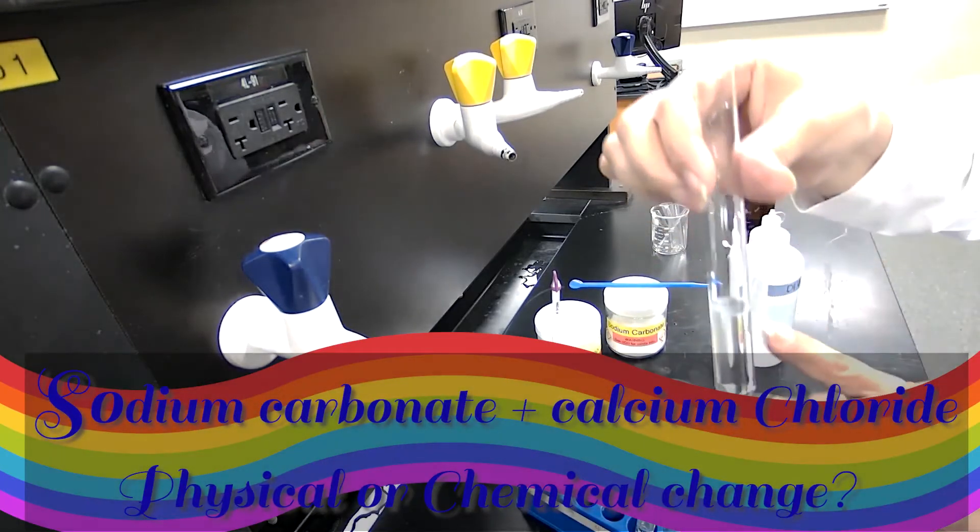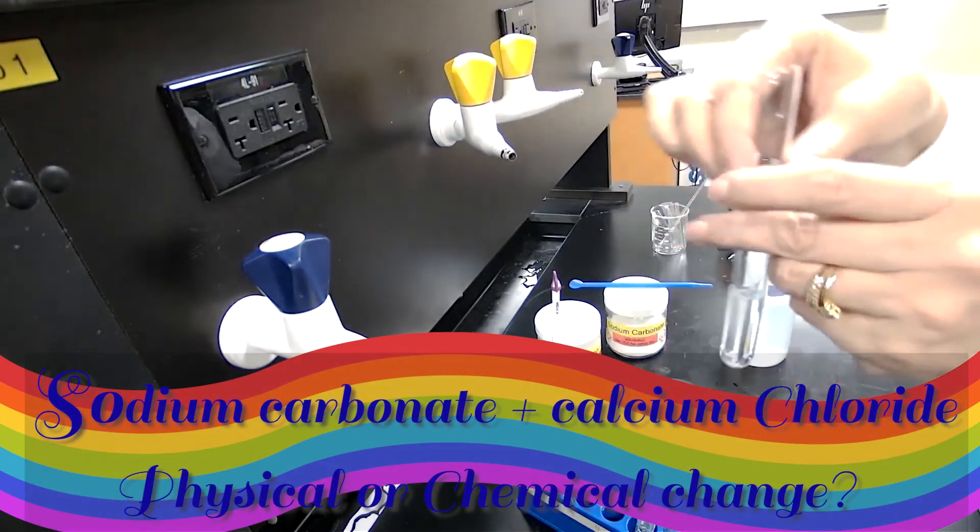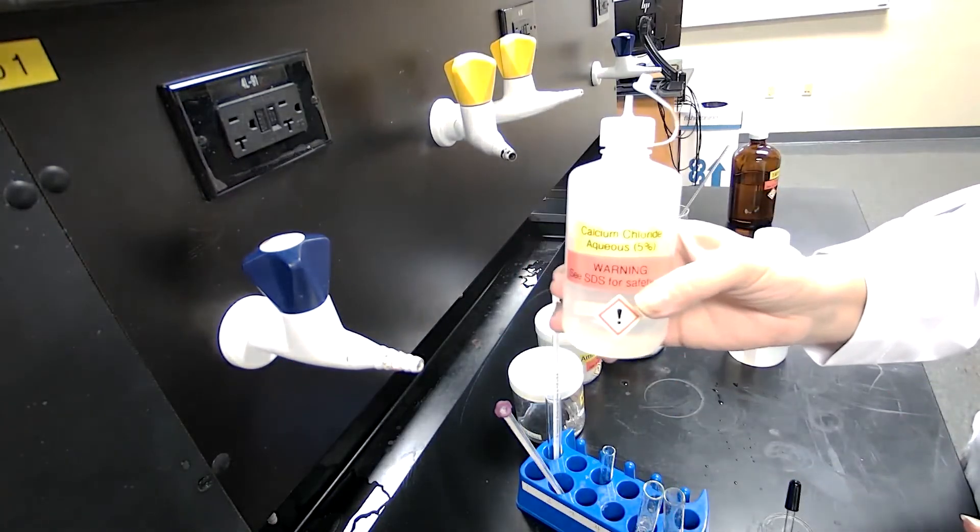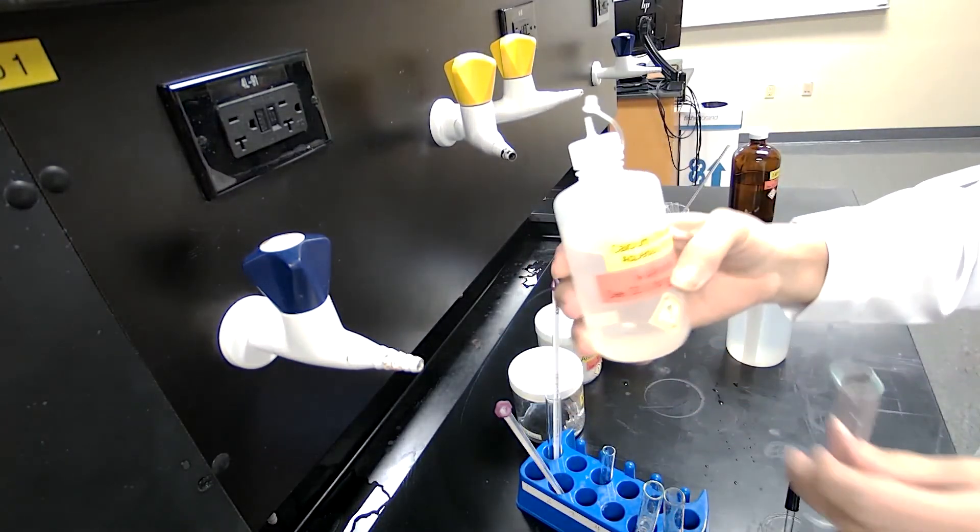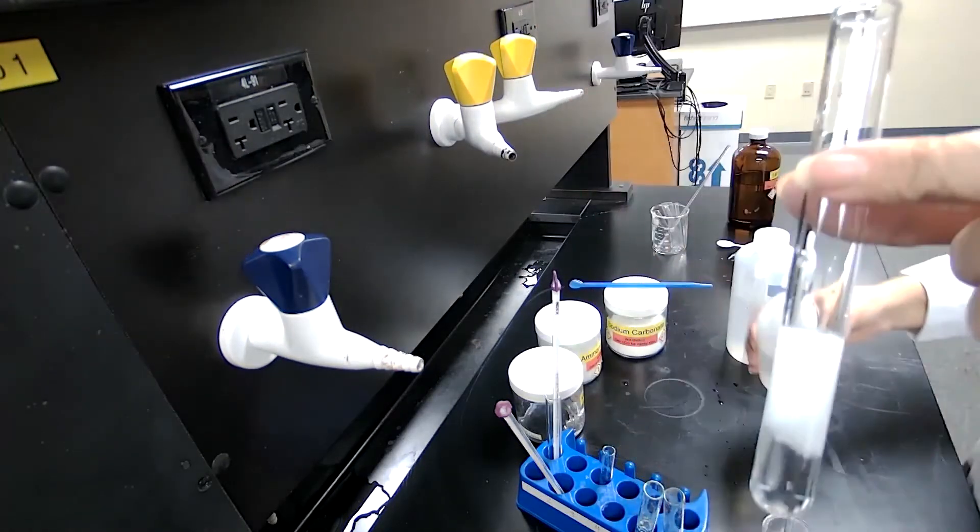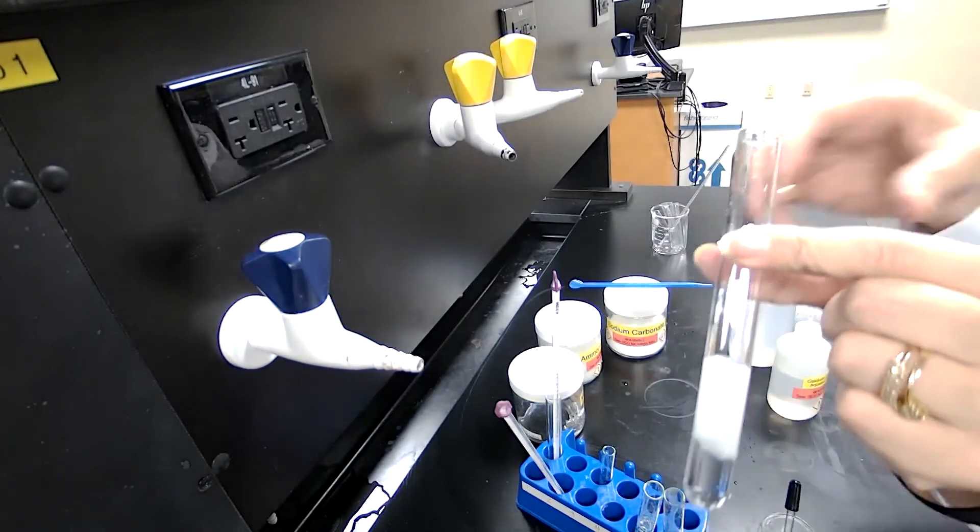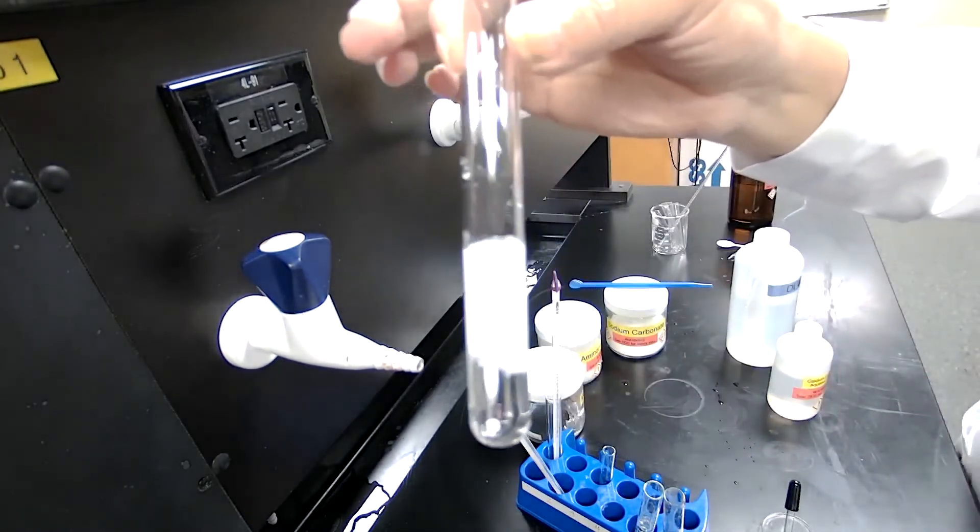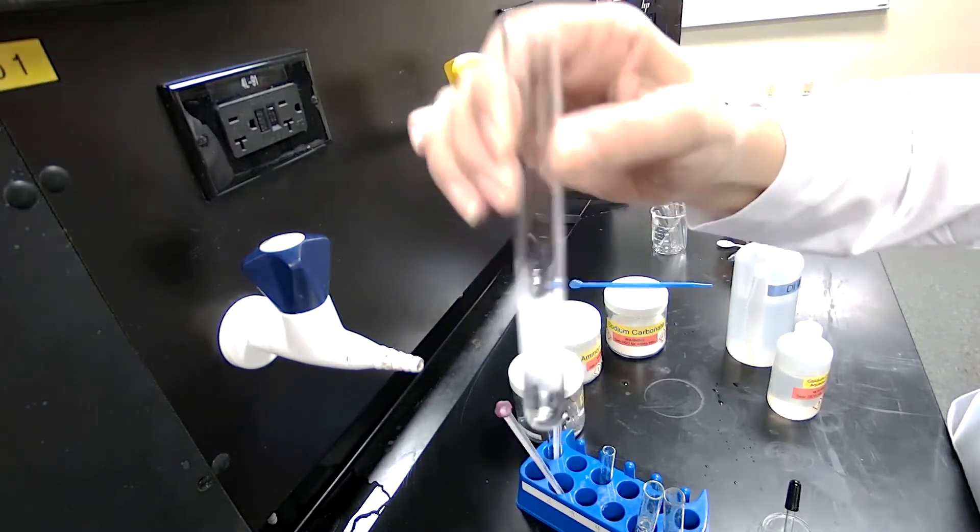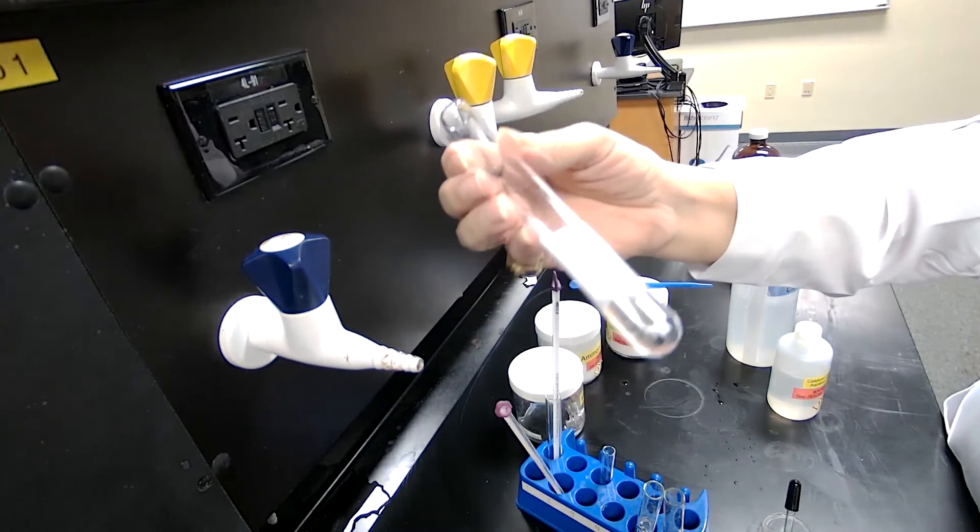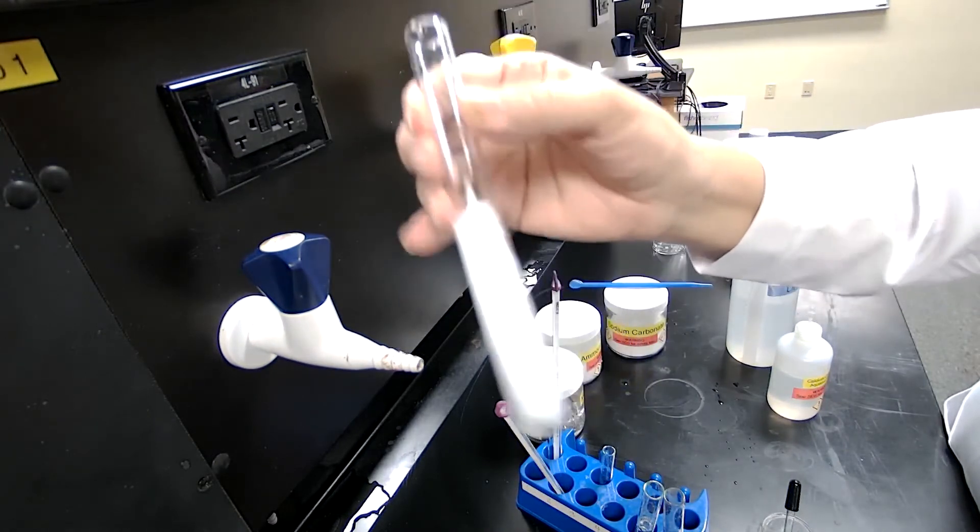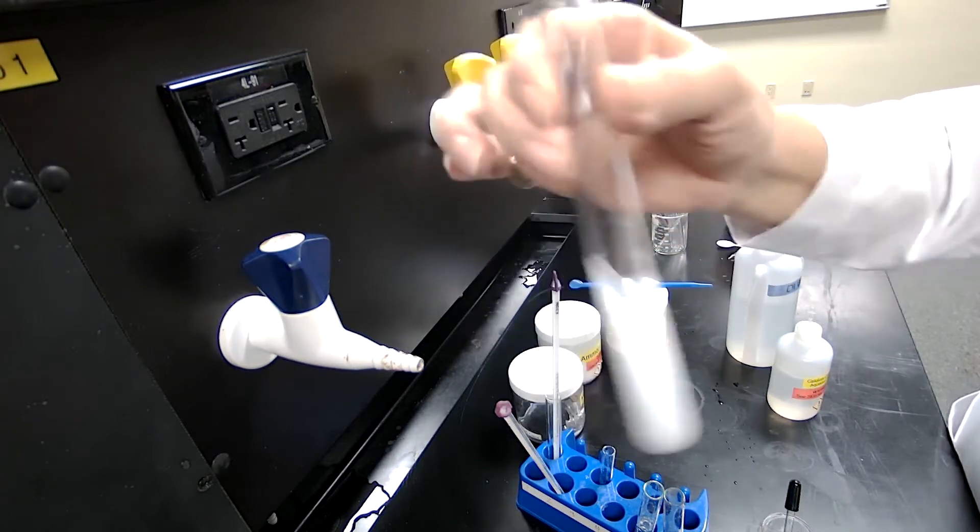To the second test tube, which is test tube B, we have a clear solution. The instruction is asking me to add calcium chloride. So I will take the calcium chloride and add it to the second solution. When I add calcium chloride to that, a white precipitate forms. It turns very cloudy and the white precipitate is forming.